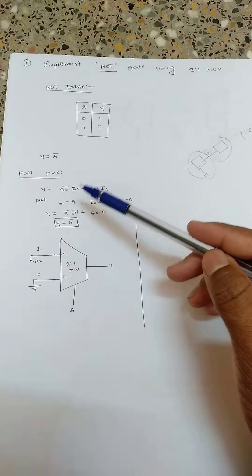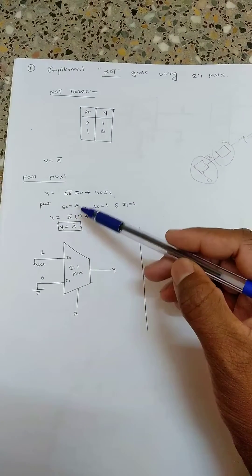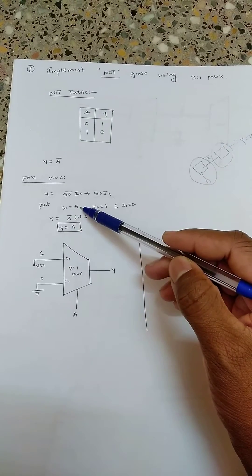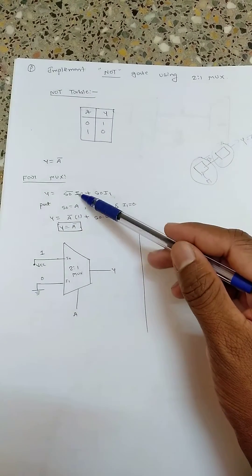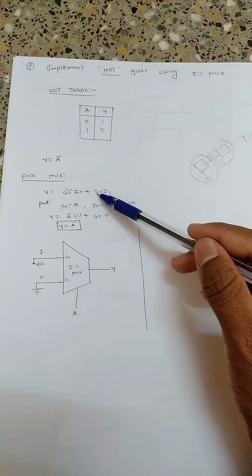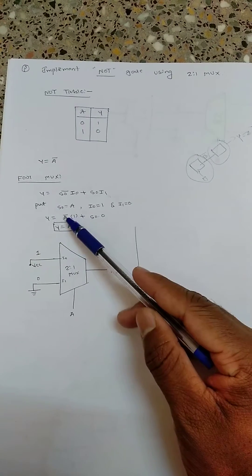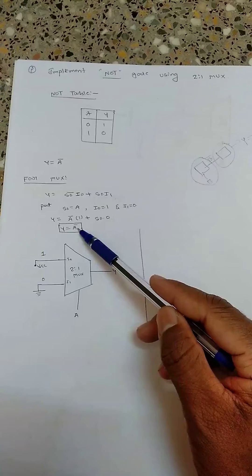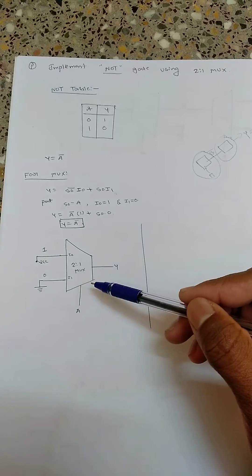Since there is only one input, I will select A as the select line. So S-naught is equated to A. Then I put I-naught equal to 1 and I1 equal to zero, so that the second term becomes zero. When I put these values: A-bar times 1 plus S-naught times 0, the second term becomes zero, and A-bar times 1 gives A-bar. So I am getting A-bar.